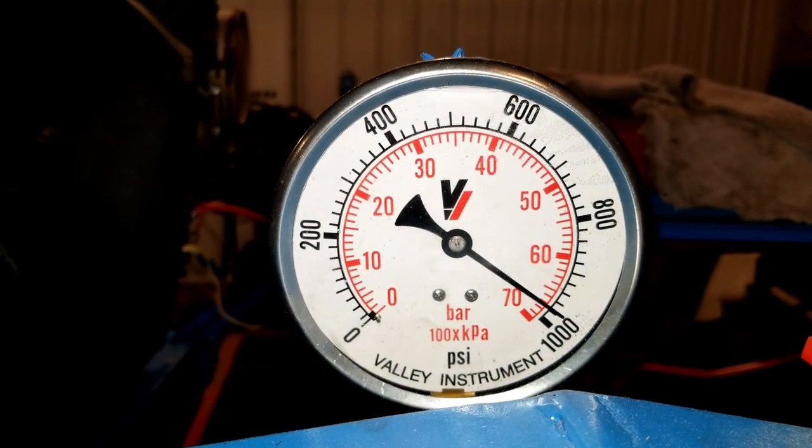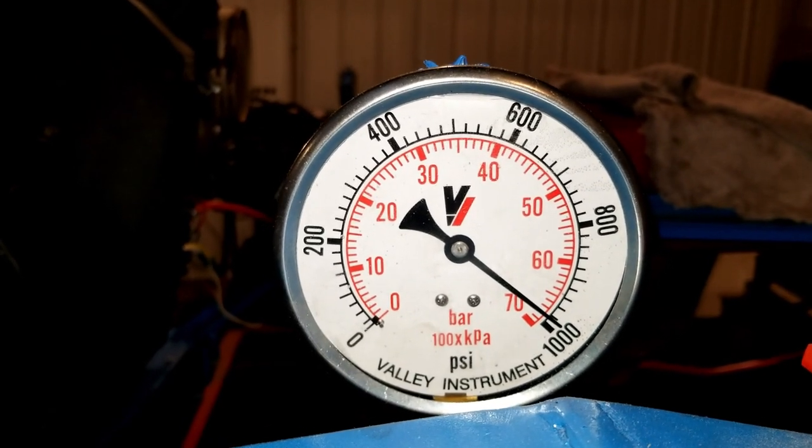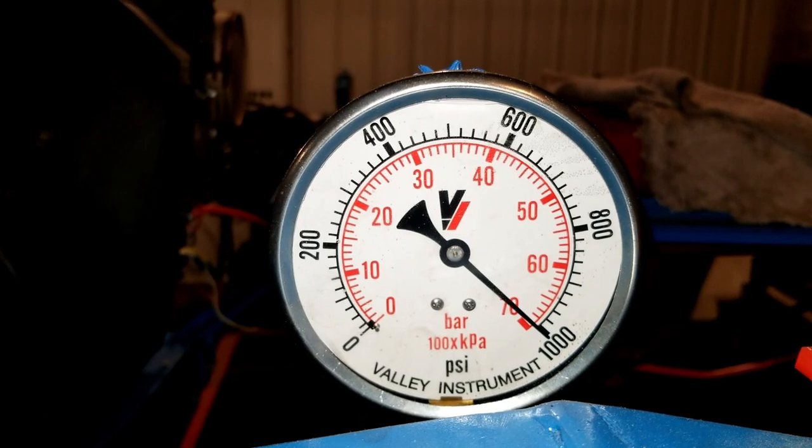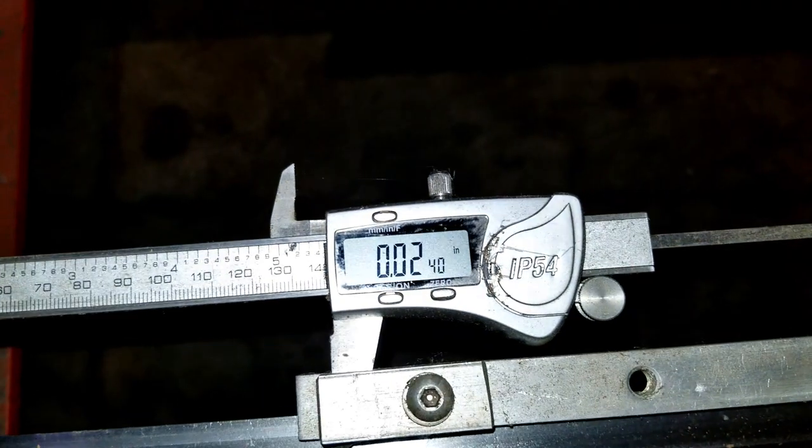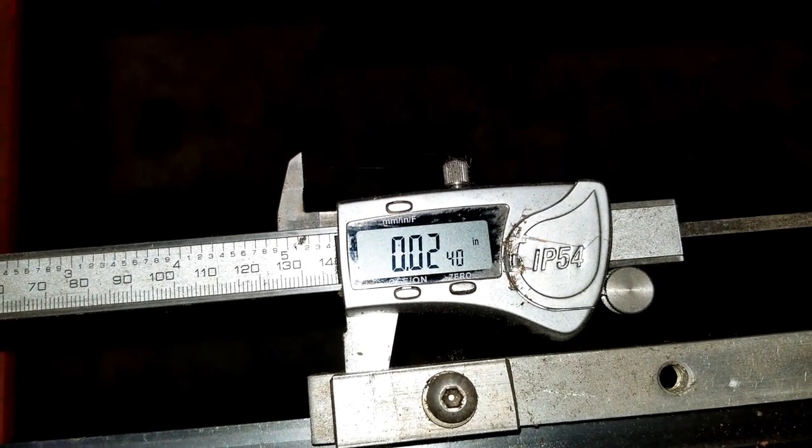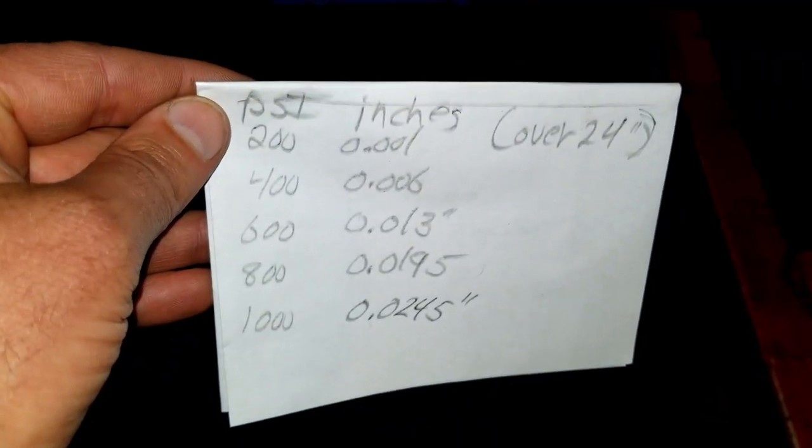So I've kind of gone beyond where I would really run the mill but I think you want to span from below where you would run to above where you would run in this exercise and that was 0.024.